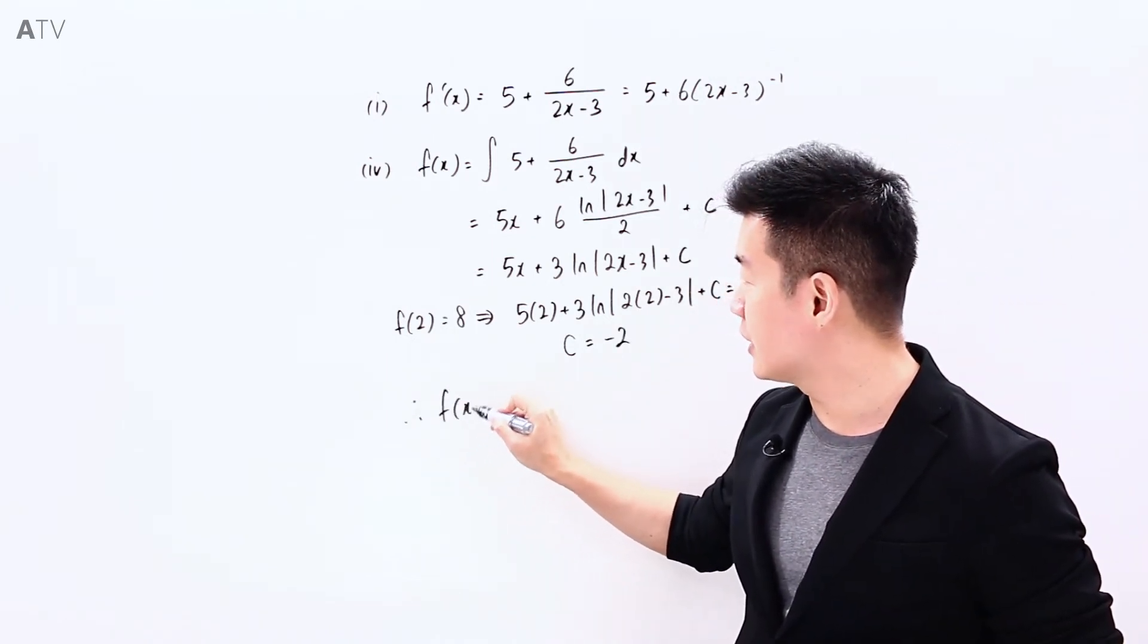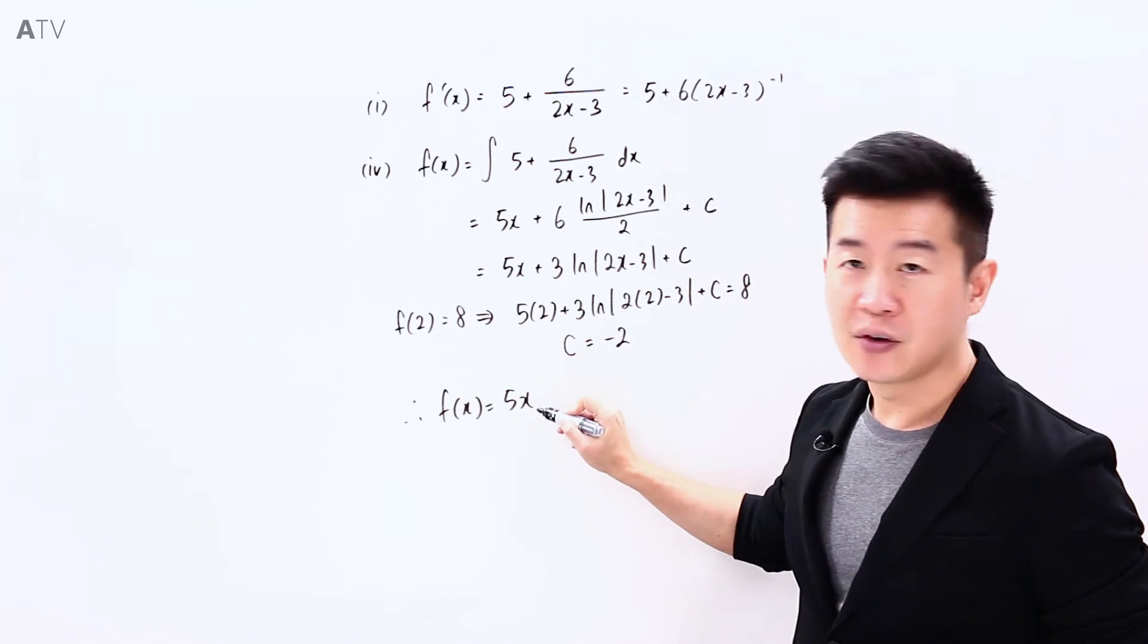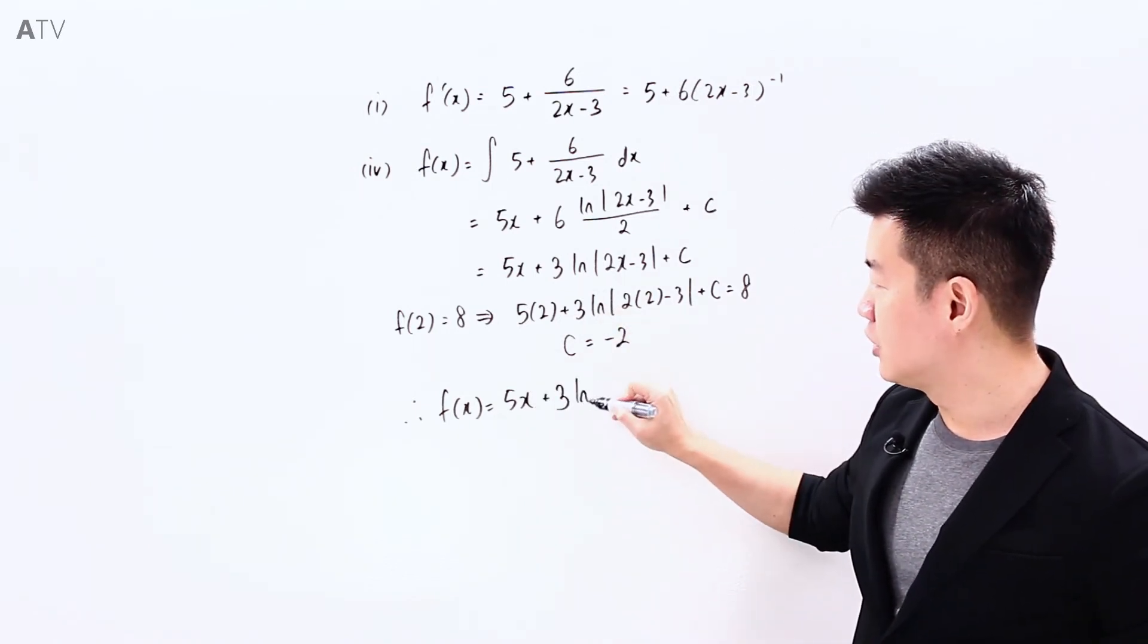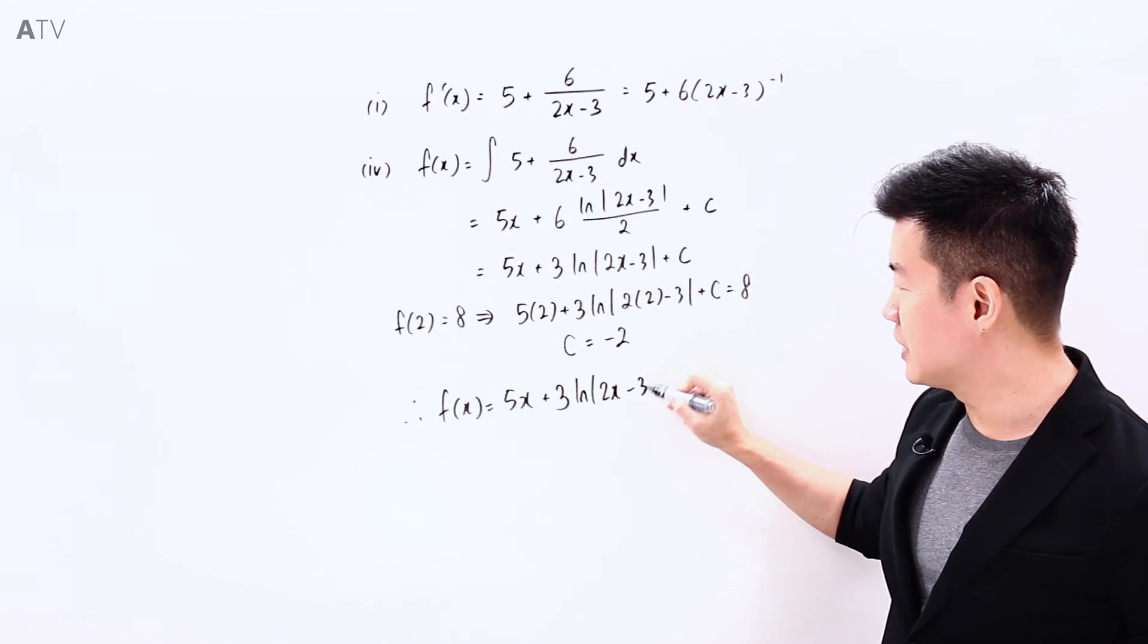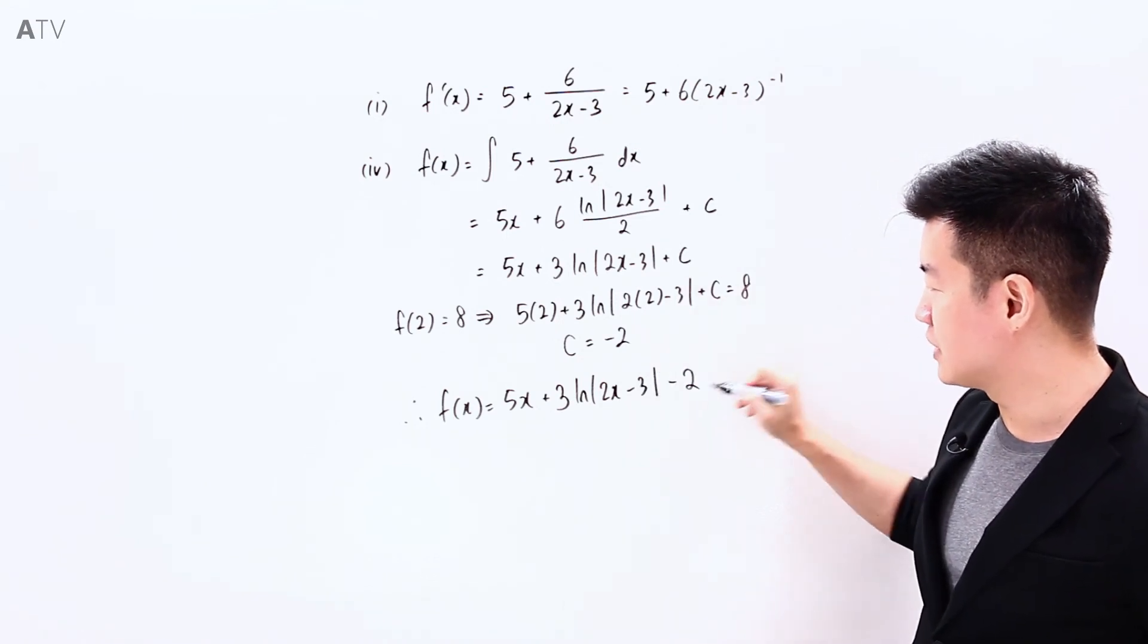Therefore fx is going to be equal to 5x plus 3 ln modulus of 2x minus 3 plus c, which is negative 2.